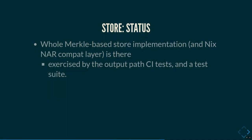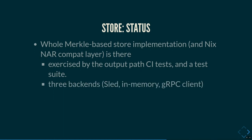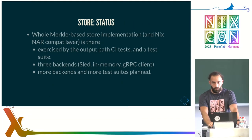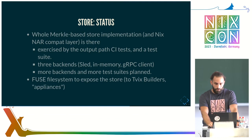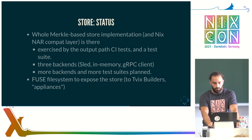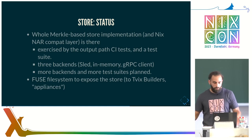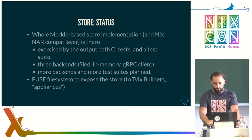The whole Merkle-based store implementation is there. We have the output path tests and a bunch of other tests — this all works. We have three backends: using Sled, an in-memory implementation, and something that talks to gRPC. I want more backends and more test suites. I am thinking about a RocksDB backend or a SQLite backend for some of these services. There is also a FUSE filesystem so you can mount the Twix store to a mount point on your disk, pointing it to a gRPC backend. So if you have a Nix appliance with an initrd that brings up networking and then wants to mount the Nix store, it can just do its thing without needing to have the data there at all.